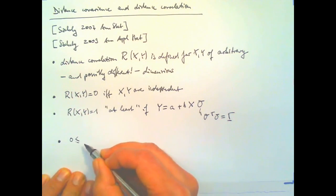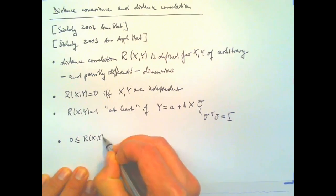So it just tells you is there a correlation or not. It scales between zero and one.